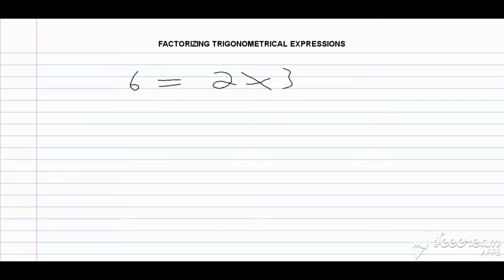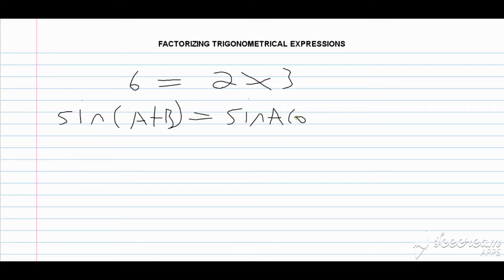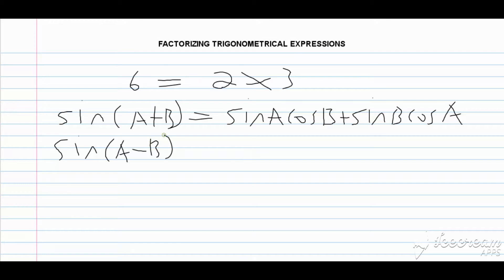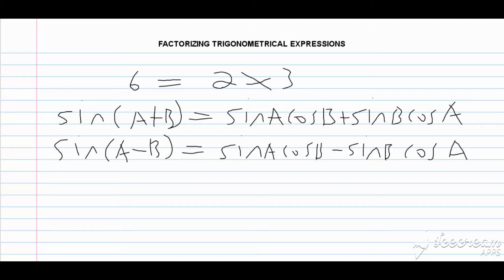Now in order to derive the factor formulas in trigonometry, we're going to have to start with the compound angle formulas, which we would have done in previous videos. So let us start by recalling the compound angle formula for sine. The sine of A plus B is equal to sine A cosine B plus sine B cosine A. Also, the sine of A minus B is equal to sine A cosine B minus sine B cosine A.